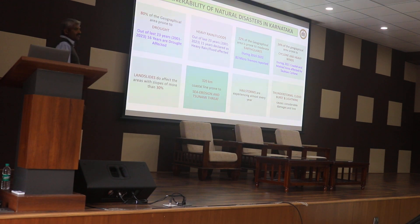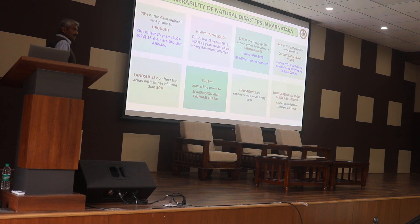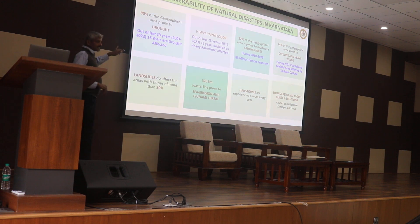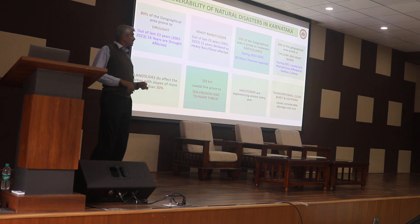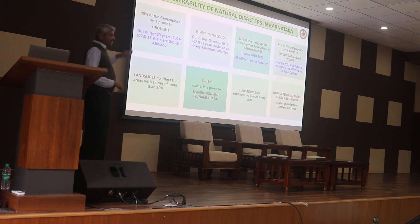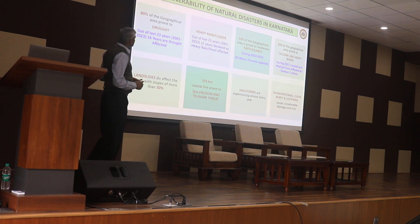This is the vulnerability of the state classified based on past and present data. If we look at drought conditions in the state, almost 80% of the geographic area is falling under drought conditions. If you see heavy rains and floods, we have taken 15 years of rainfall data for analysis.